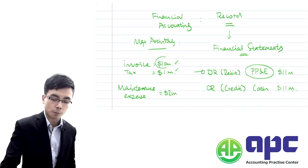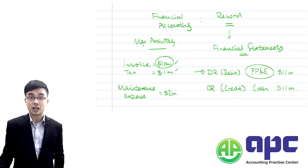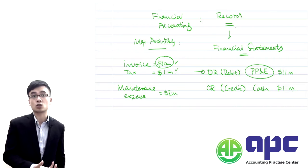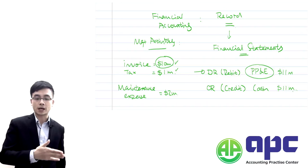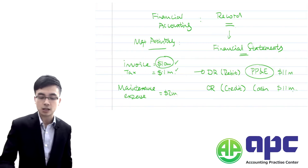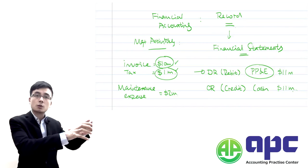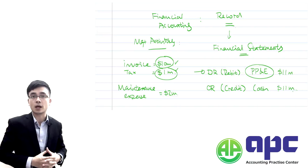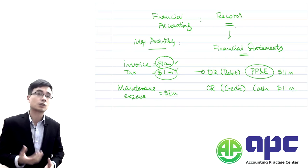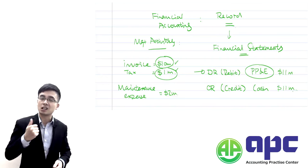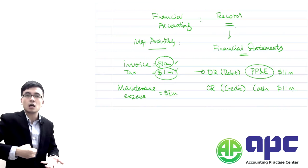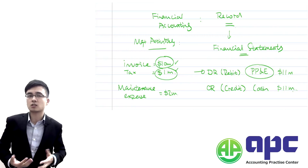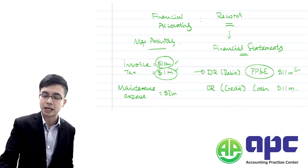We capitalise the $10 million because without paying that amount we cannot have the asset — we paid for it, signed a contract, so it becomes our asset which we can control and the expense can be reliably measured. We also include the $1 million tax because if we don't pay that tax, the asset cannot be shipped from India to Hong Kong. Those expenses bring the asset to its present location and condition, so the ownership belongs to our company — hence we capitalise the full $11 million.